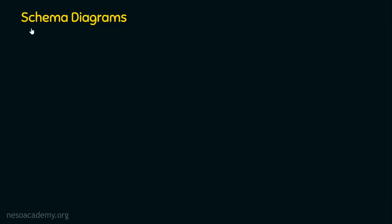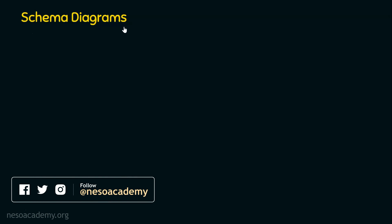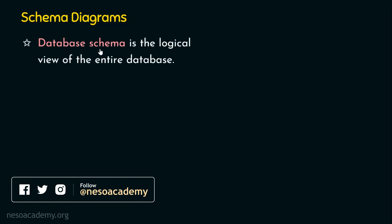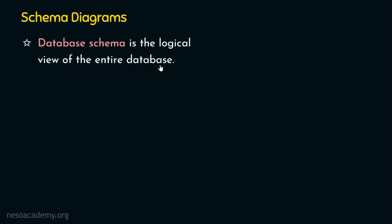So we are now here on the topic of schema diagrams. First, let's see what a schema is. Database schema, or simply schema, is actually the logical view of the entire database. We may have a database and we want to represent it in a logical manner, so obviously diagrams help us convey the logical structure. Schema diagrams represent the database schema, and these schema diagrams are going to represent the entities like the objects that are used.